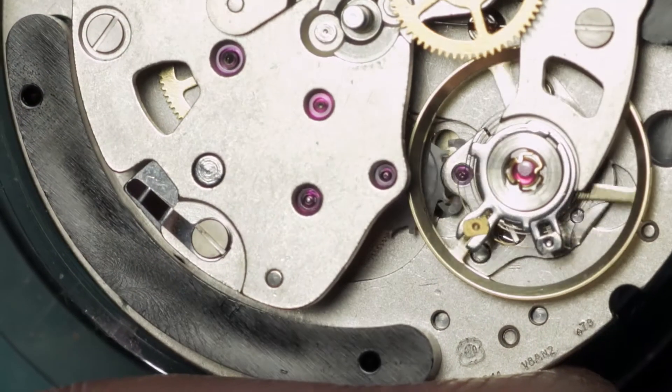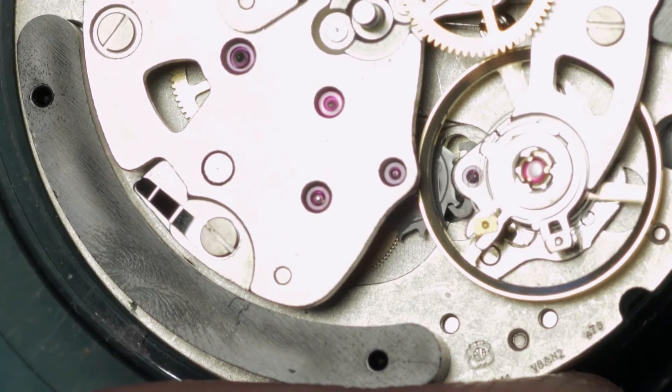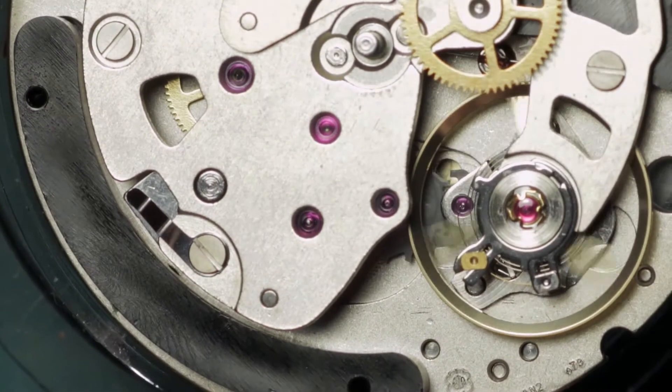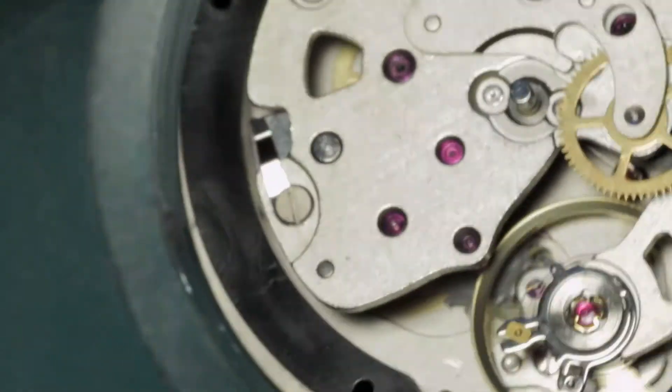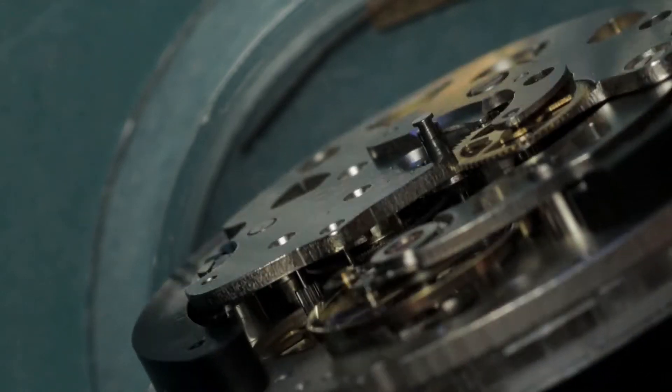It's one of those things that you just—it's a bit mind-boggling. You don't expect it to, but it really does work incredibly well. Plastic pallet fork, plastic escape wheel.